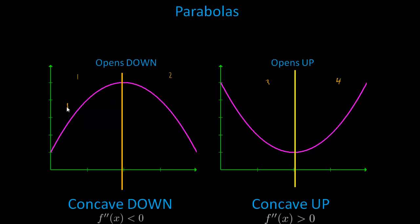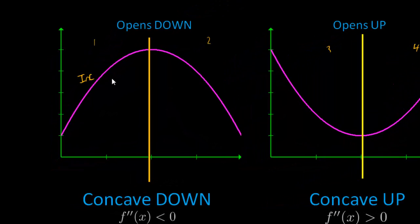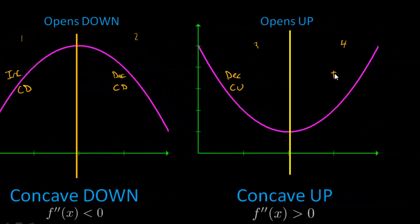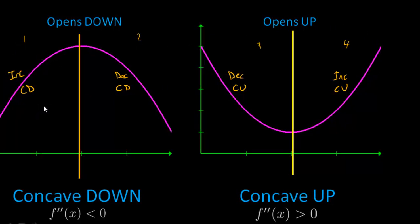But notice that it was broken up into four different regions. This region is increasing, but concave down. So increasing, concave down. This is decreasing, concave down. Over here, this is decreasing, concave up. And finally, increasing, concave up. So if you can remember these four, then you'll know how to connect any two dots using concavity.